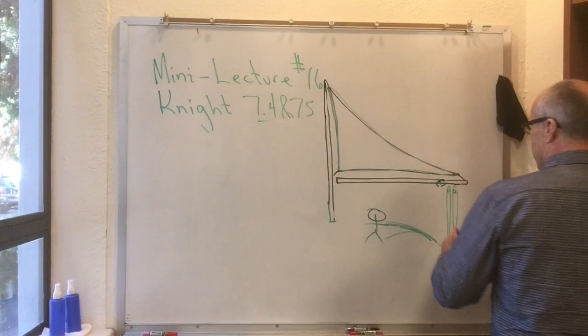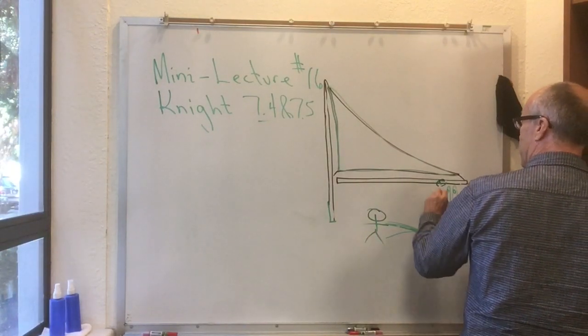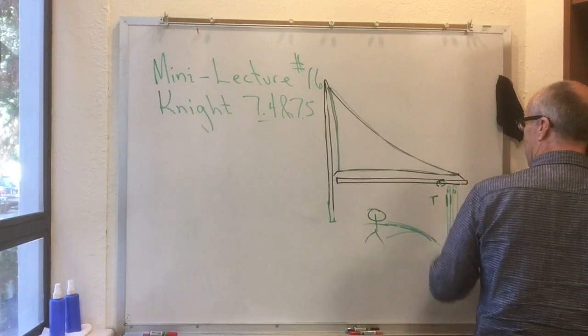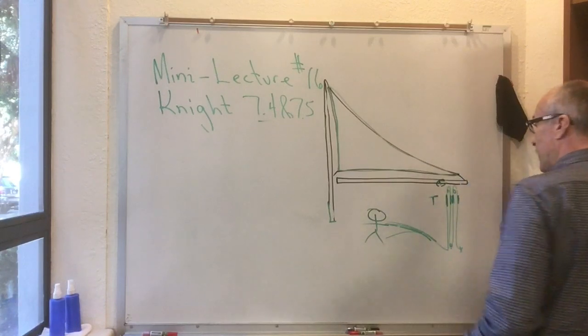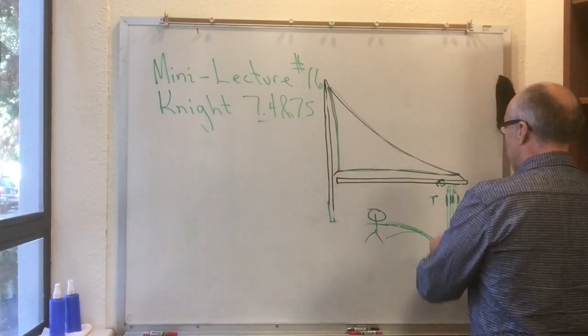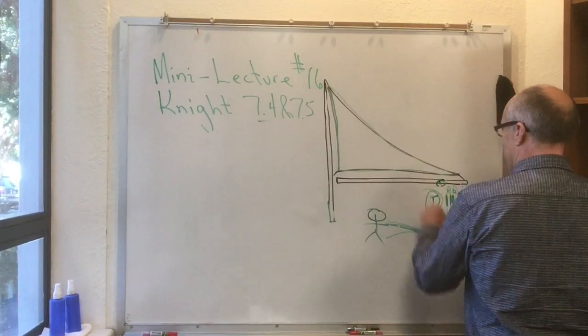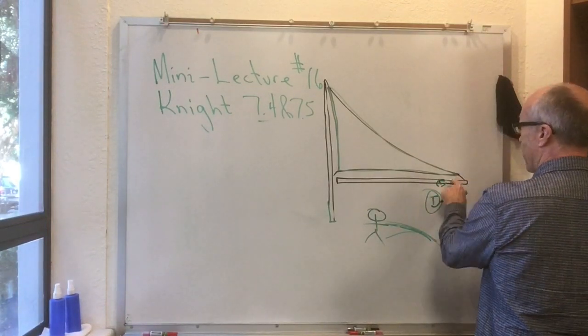Well, the beautiful thing is, is that this thing pulls down with a tension T, this thing is pulling down with a tension T, this thing is pulling down with a tension T, and that thing is pulling down with a tension T. So, that means that the total, whatever the tension is in this thing, is actually pulling down four times on this boom.